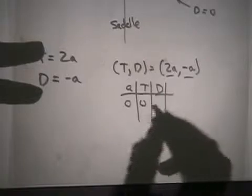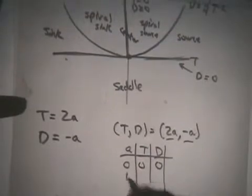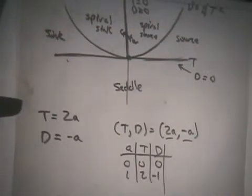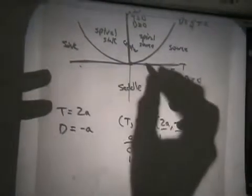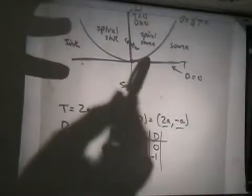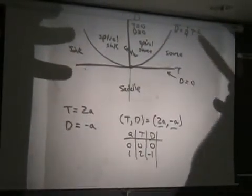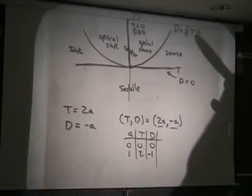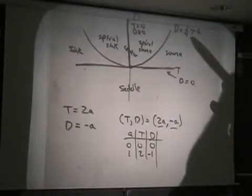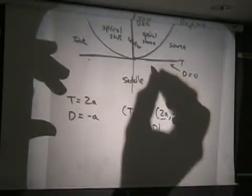I'll plot a couple points. It's actually going to be a straight line because these are linear, so I'll just plot a couple points and connect the dots. When a is 0, T is 0 and D is 0, so it goes through the origin. When a is 1, T is 2 and D is negative 1, so the point T equals 2, D equals negative 1 is on this parametric curve. Is that point above or below this parabola? If you plug T equals 2 into this equation, you get 2 squared times 1 fourth is 4 over 4, D is 1.